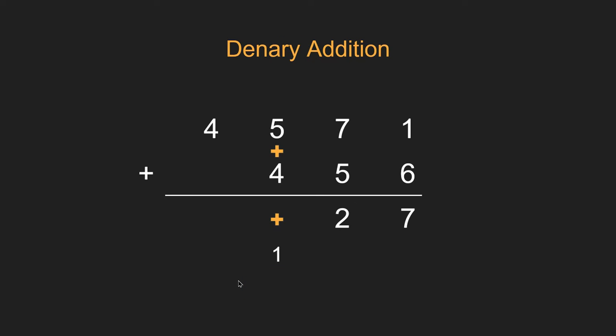We put the carry out into the next set of addition, which makes it the carry in. So we've got A is 5, B is 4, and our carry in value is 1. So 5 and 4 is 9, add 1 makes 10. We keep the 0 where it's at and bring the 1 over to the next column. 4 and 0 and 1 make 5, and there is our complete denary addition.